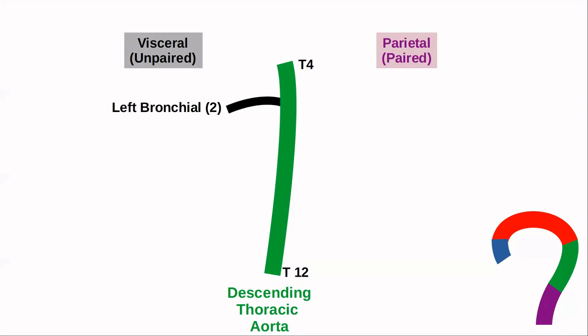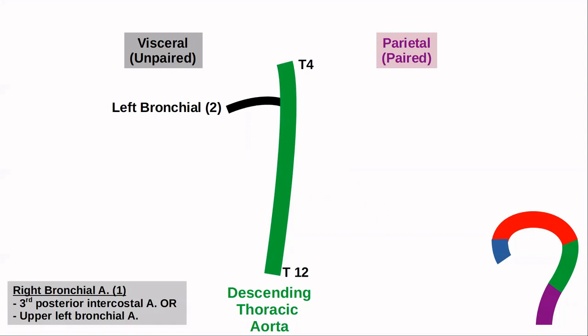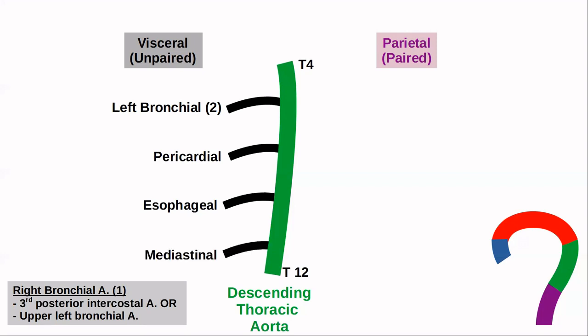The descending thoracic aorta gives rise to two left bronchial arteries supplying the left lung. A commonly asked question is where the right bronchial artery arises: it is one in number whereas the left bronchial arteries are two, and it can arise from the third posterior intercostal artery or the upper left bronchial artery. The descending thoracic aorta also gives rise to pericardial arteries, esophageal arteries supplying the lower third of the esophagus, and mediastinal arteries — all unpaired visceral arteries.